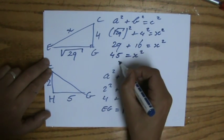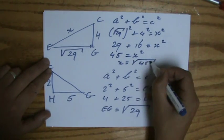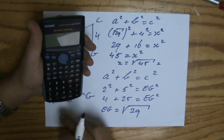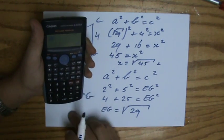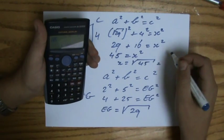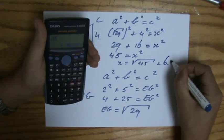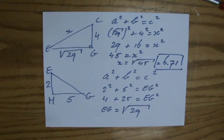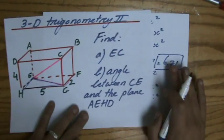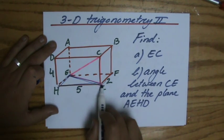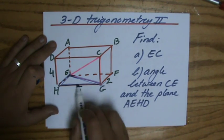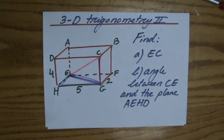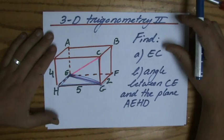So x is the square root of 45. That's the first time I need my calculator. Square root of 45 with three significant figures is 6.71. So the length of EC is 6.71. I first had to find out EG using Pythagoras, then I used that information in this right angle triangle to find EC.